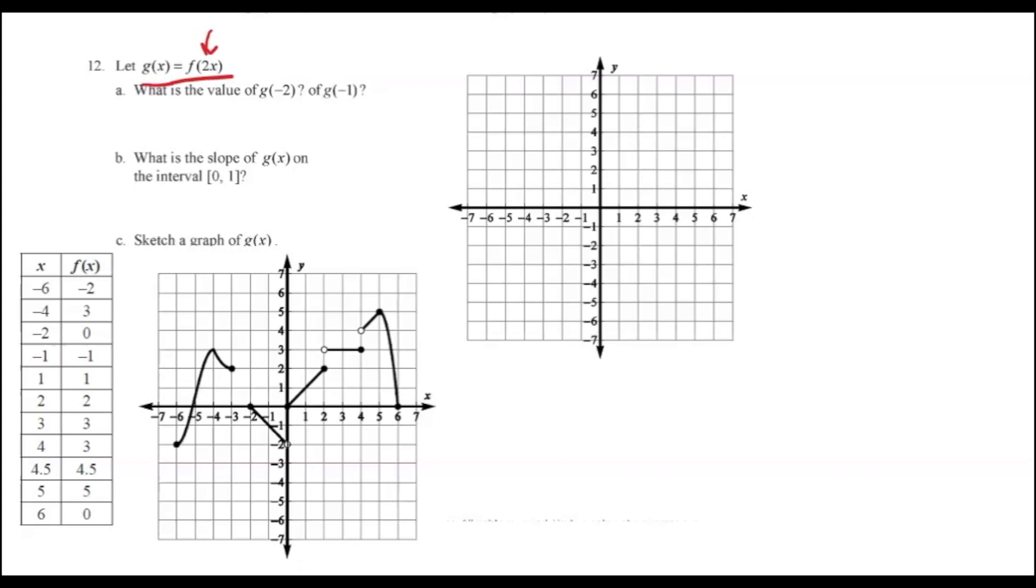If we do part A, it asks for G of negative 2. And it says G of X equals F of 2X. So that means this will be F of negative 4 if we multiply that negative 2 times 2. And then we have two options. We can either look at the graph at negative 4, and we can see that it goes up to 3, or we can use the table and see that at negative 4, it equals 3. So we know that G of negative 2 is going to be 3.